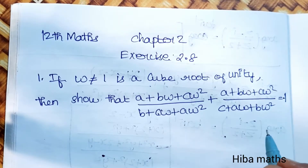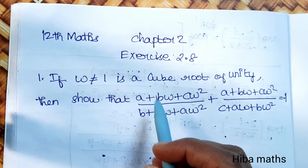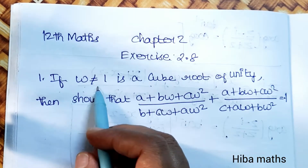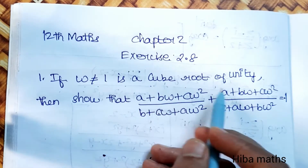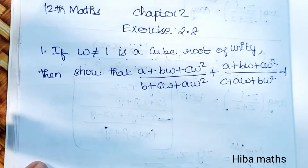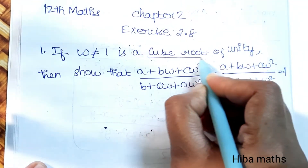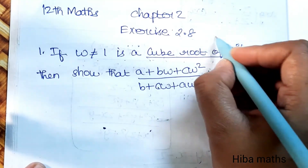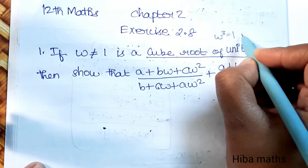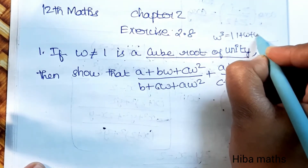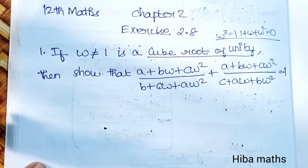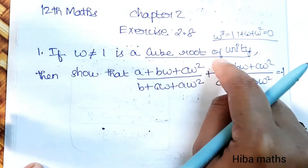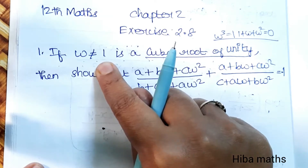Hello students, welcome to Heba Max 12th standard Maths, Chapter 2, Exercise 2.8, first question. If omega is not equal to 1 and is a cube root of unity, we will learn: omega cubed is equal to 1, and 1 plus omega plus omega squared is equal to 0.